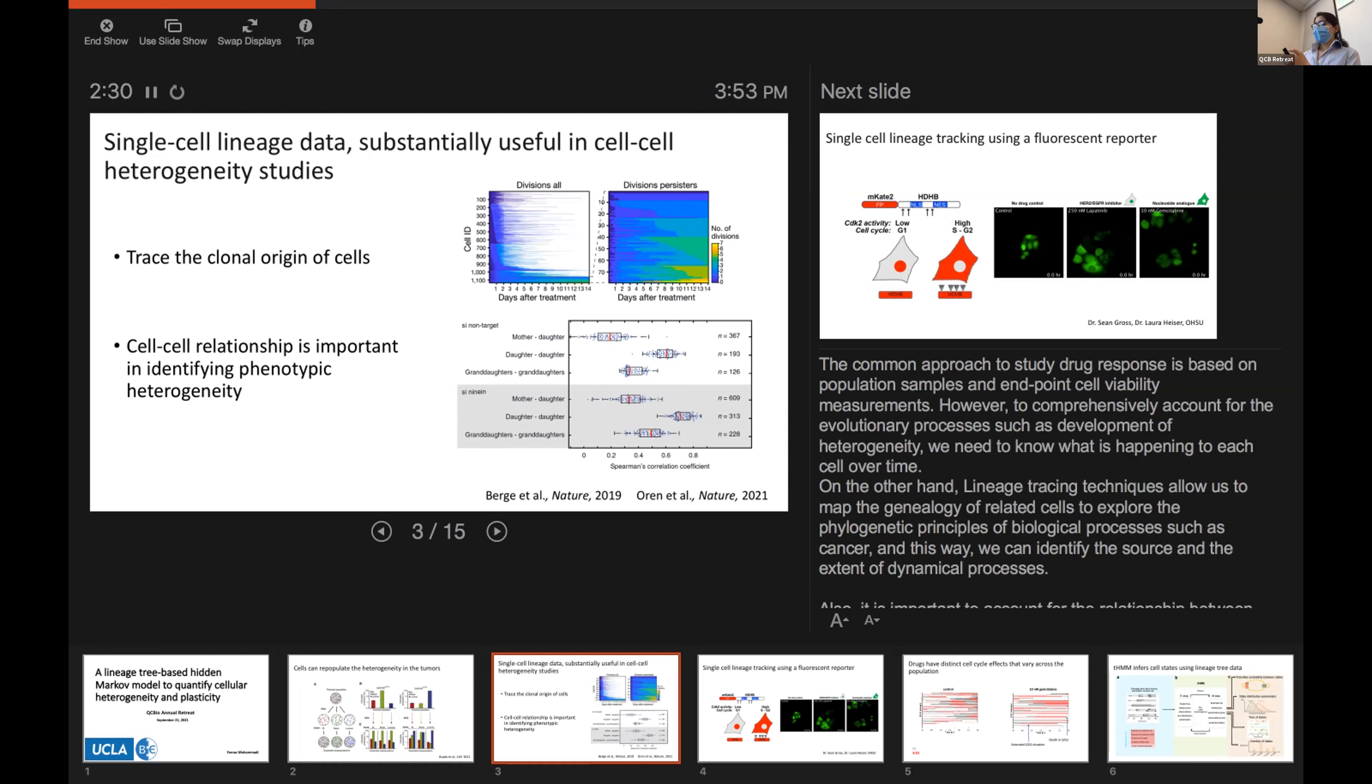For example, in the top, there's a study that shows cells have been treated with osimertinib for 14 days, and there is a subpopulation of resistant cells, and they have used lineage tracing in order to trace the clonal origin of these resistant cells.